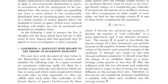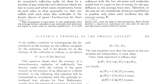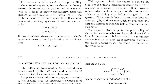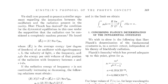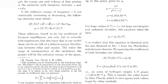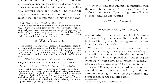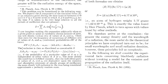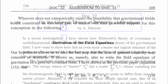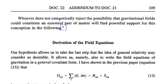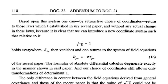In 1905, he churned out four truly groundbreaking ones. He taught us about the photoelectric effect, Brownian motion, his special theory of relativity, and the equivalence of mass and energy. Then in 1915, he expanded upon his theory of relativity and introduced general relativity. But what is general relativity?